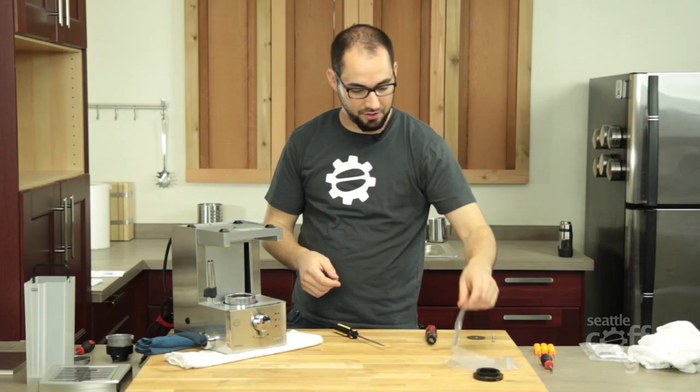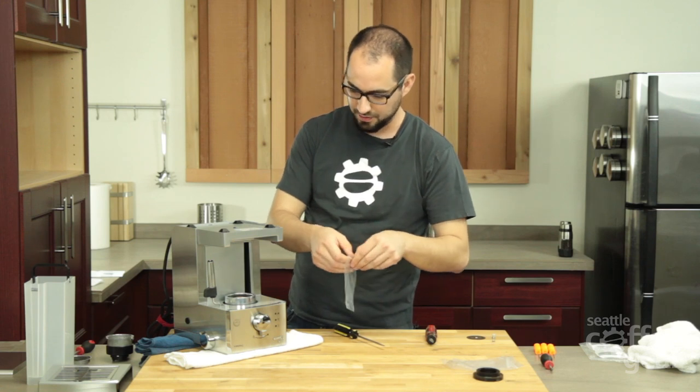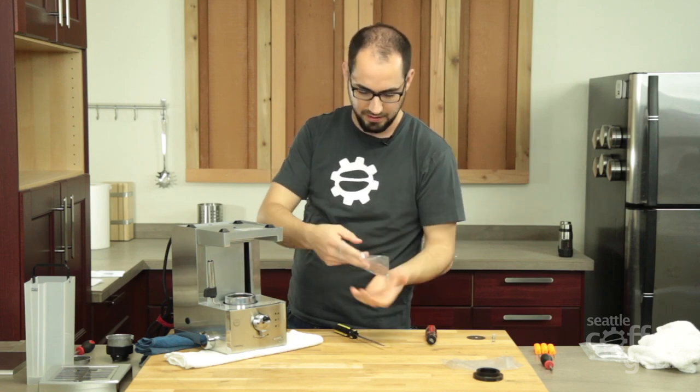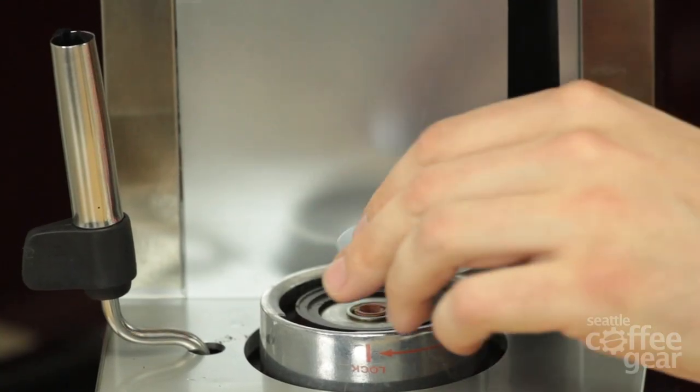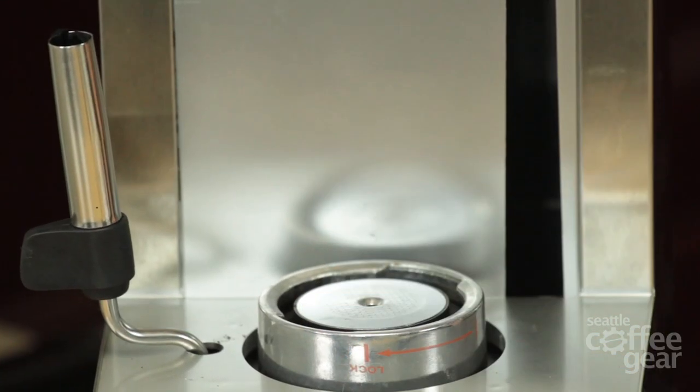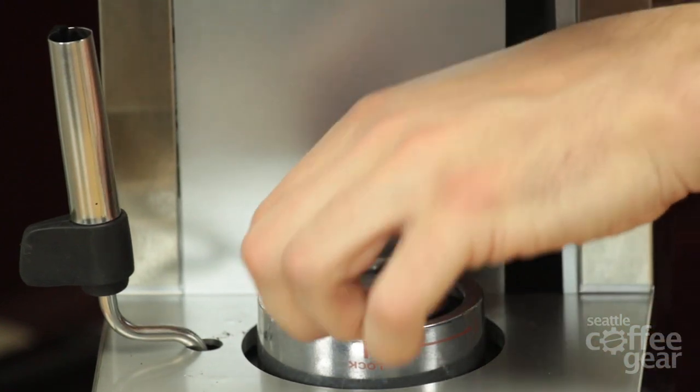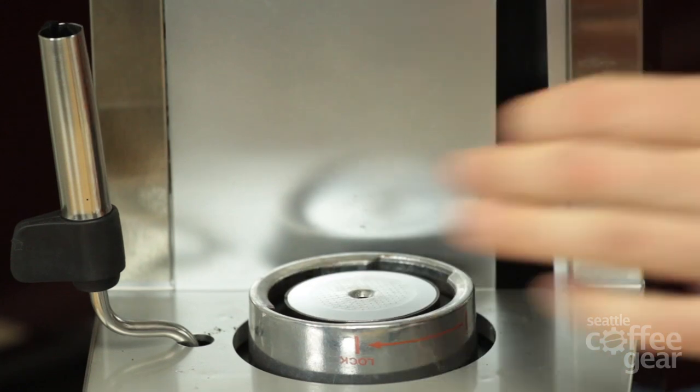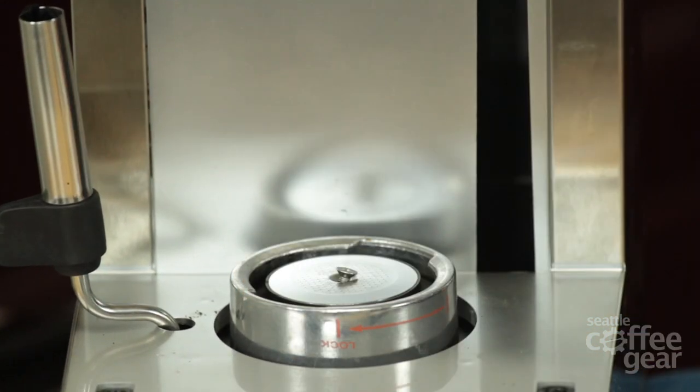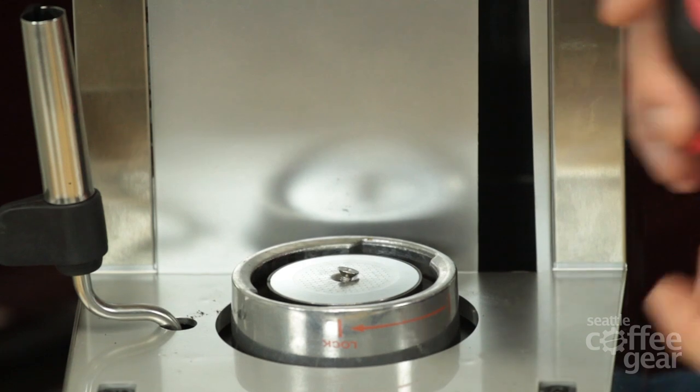Now we're ready for our new screen and screw, which is probably the easiest part of the tune-up kit. We'll put our screen down first. And as you can see, it just fits right into the brew head gasket perfectly. Those outside edges, it should sit right there just perfectly. And then our screw will hold that in place. And now we're ready to install that.